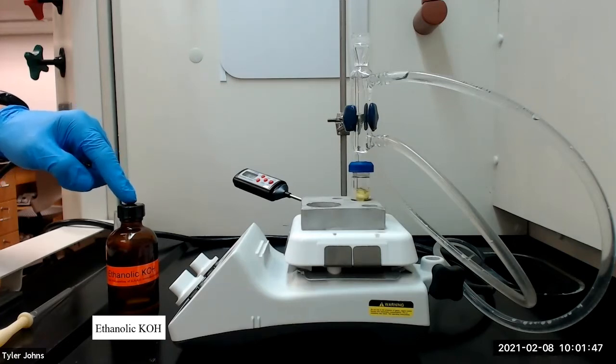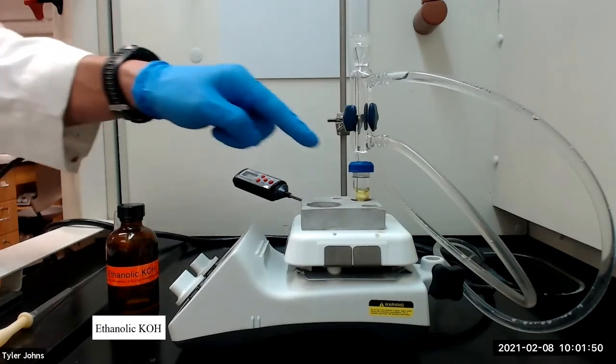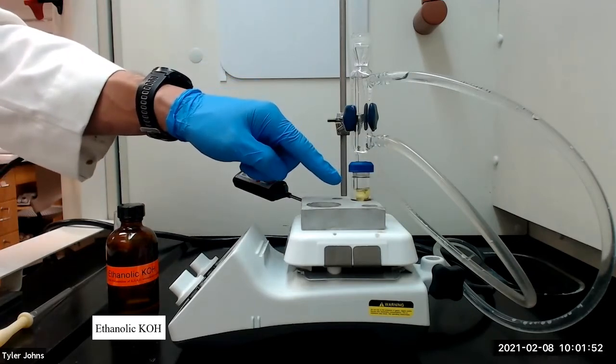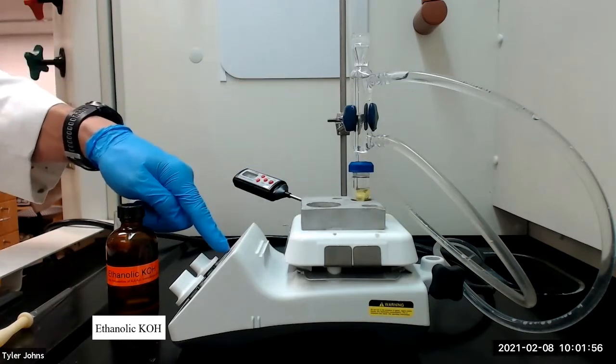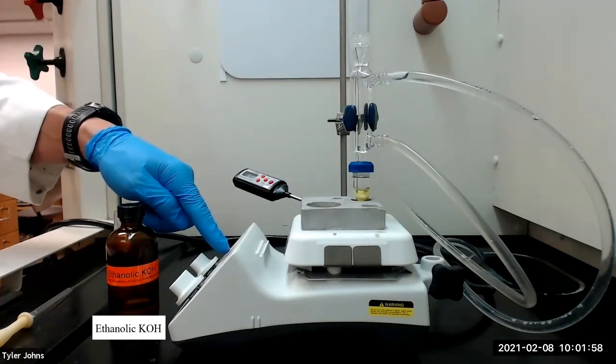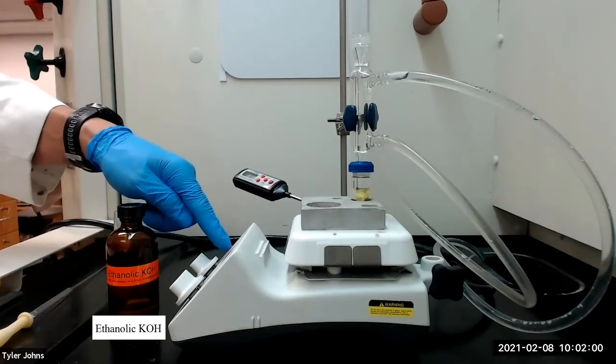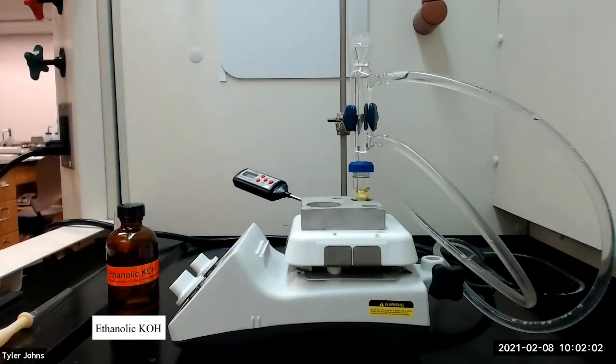Once the ethanolic potassium hydroxide solution is added to the mixture, the mixture will immediately turn a deep purple. We will then need to raise the temperature of the hot plate until the mixture is at a gentle boil, and we will heat the mixture while stirring at a gentle boil for 15 minutes.